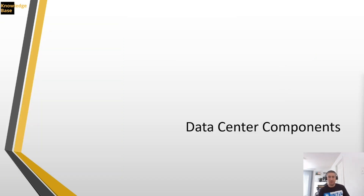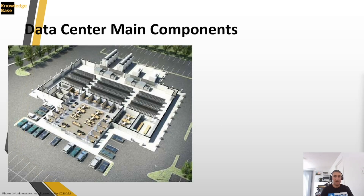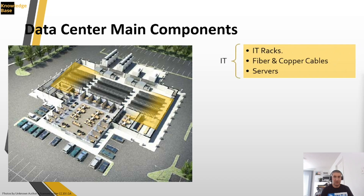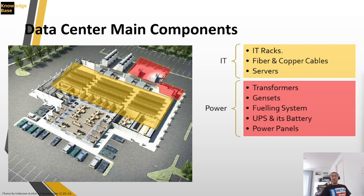Let's talk about data center components. All the types of data centers have the same components. There are three main components: first is the IT part — servers, IT cables, IT infrastructure, and switches. Second is the power system, which includes transformers, power generation plants or gensets, a fueling system, UPSs, batteries, and power panels and cabling running from the generation source up to the racks.